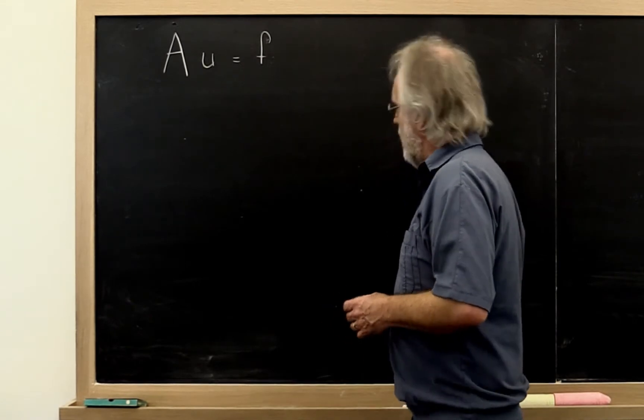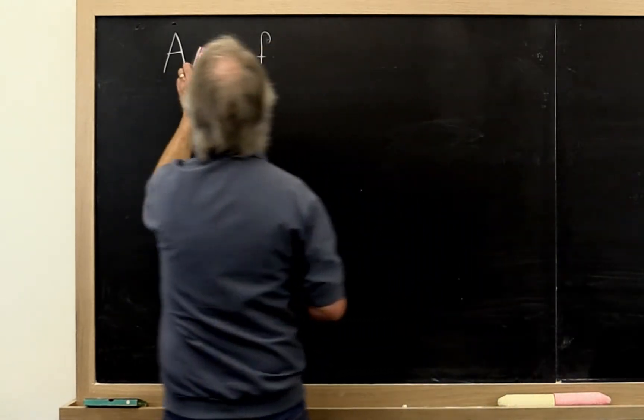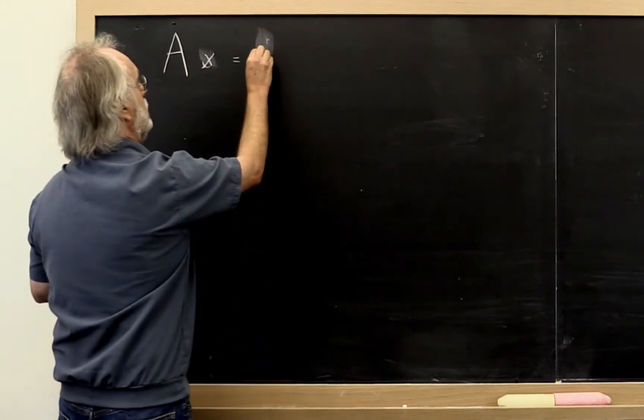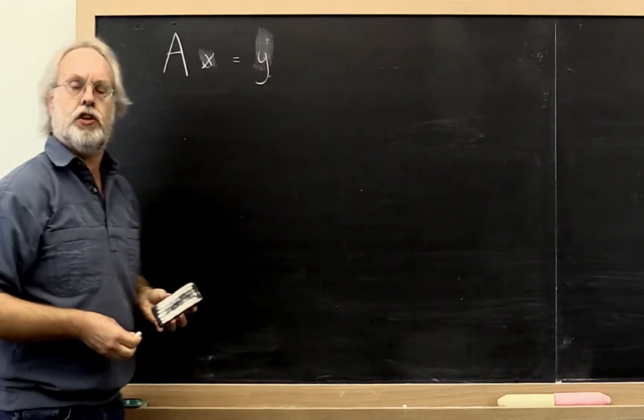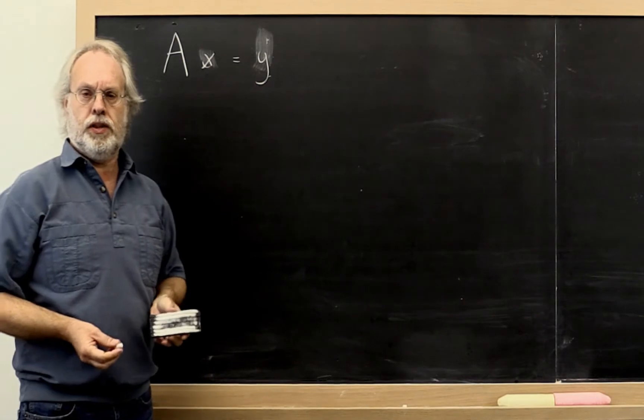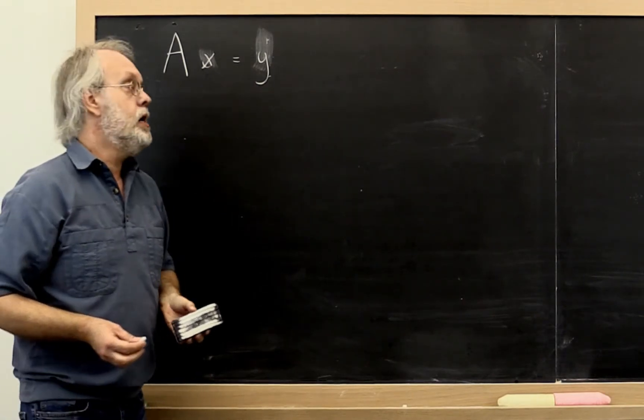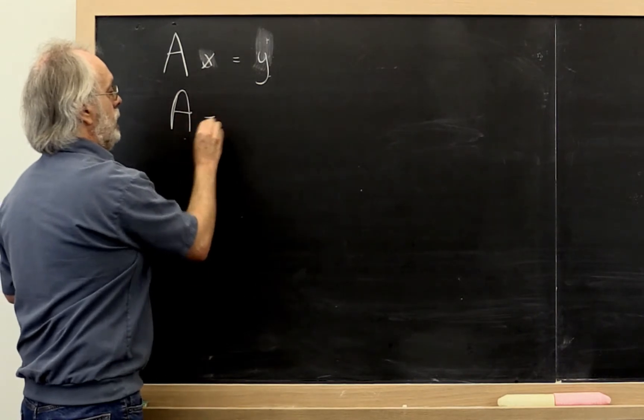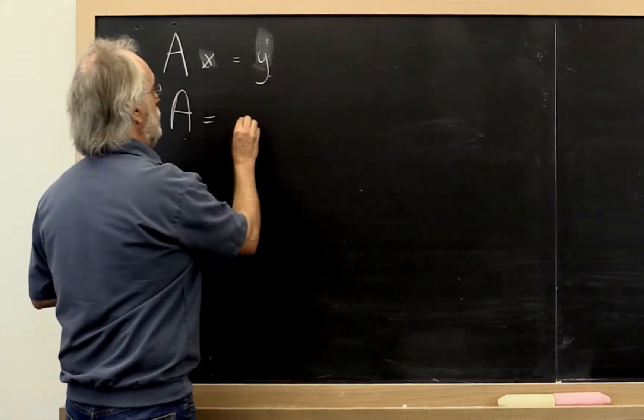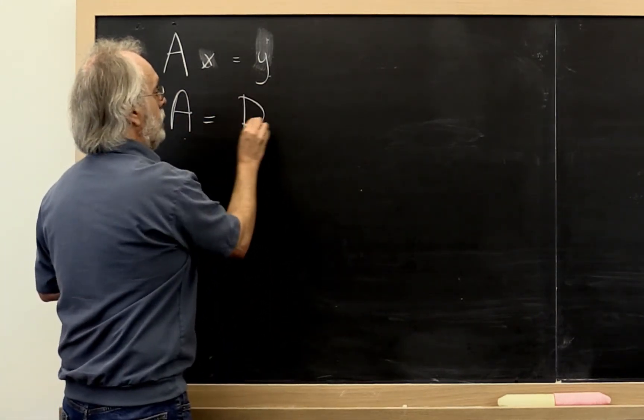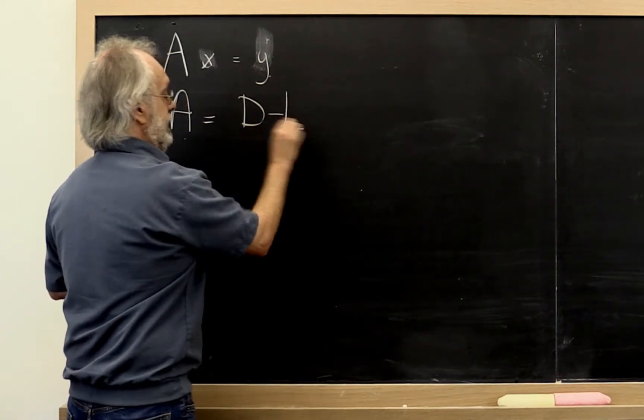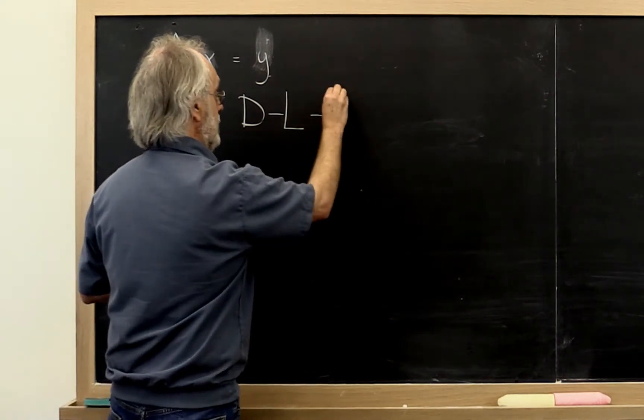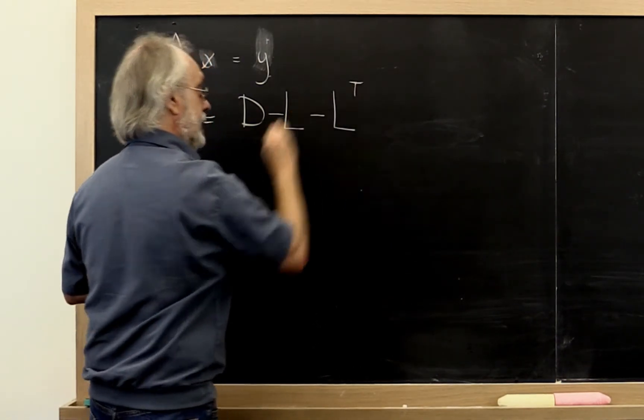Now we like using x and y. So let's actually continue now our discussion with x and y. And so far we've taken our matrix A and we have partitioned it into the diagonal minus the negative of the lower, strictly lower, triangular part minus the transpose of that.